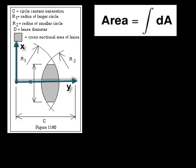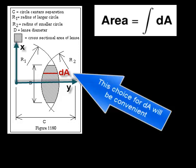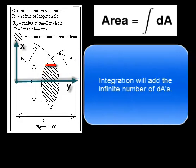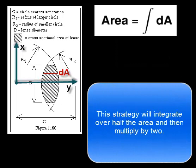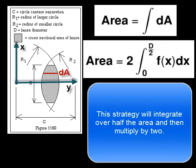Area is the integral of the differential areas. This choice for differential area will be convenient. Integration will add the infinite number of differential areas. This strategy will integrate over half the area and then multiply by 2.